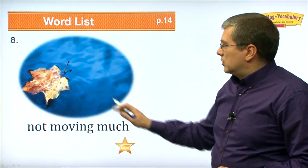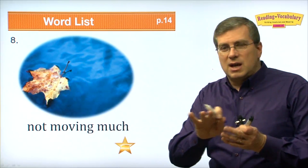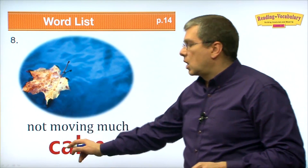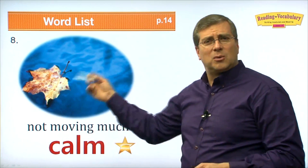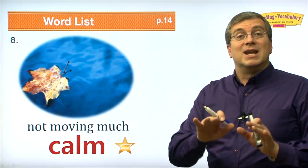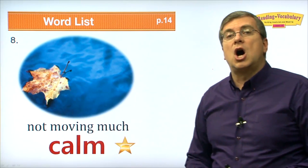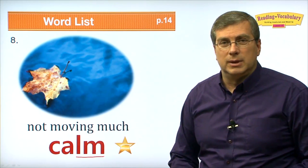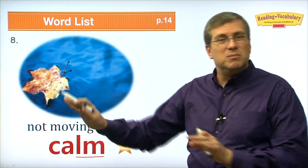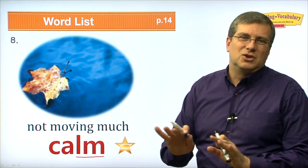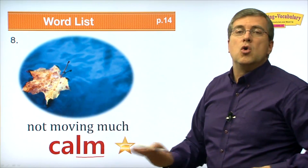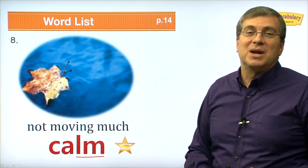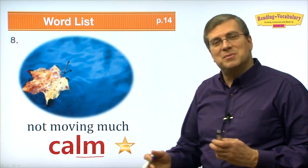Number eight. Not moving much — if there's a leaf on the water and it's just staying still, barely moving, what do we say? It's calm. We saw this word before with the park — it's calm and not violent, peaceful. Another word for peaceful is calm. The water is calm; it doesn't move much, or it doesn't move at all. No motion, no action — it's calm. Some people say calm is boring, but sometimes calm is peaceful and nice.